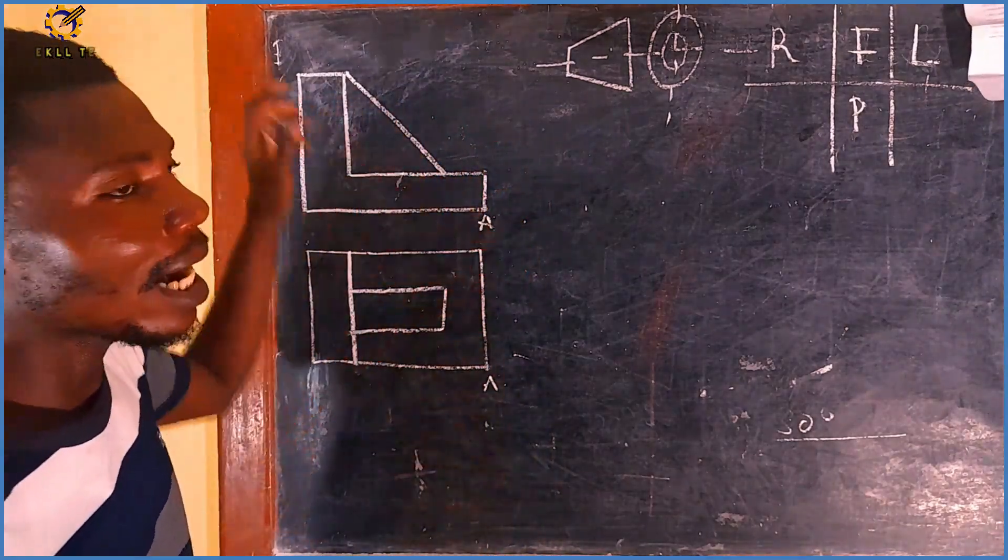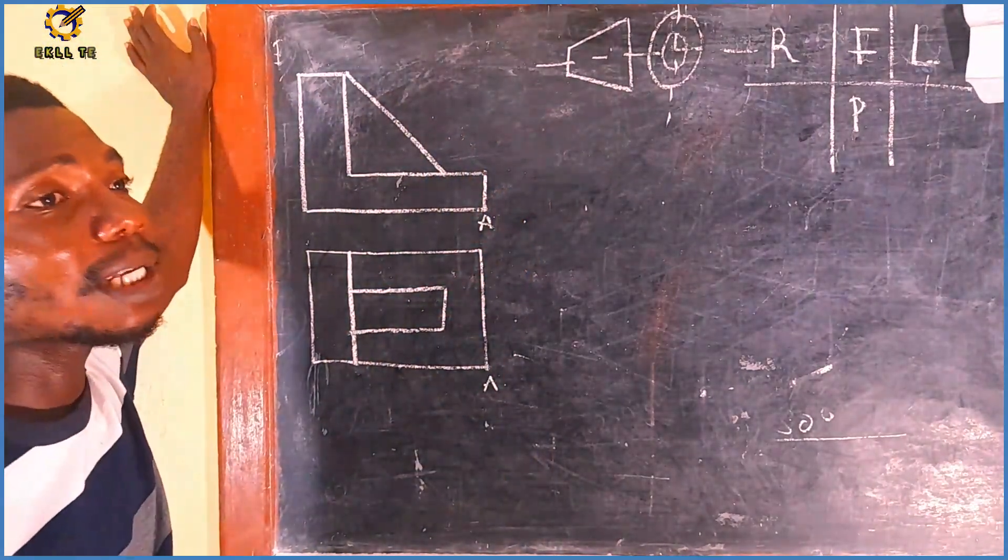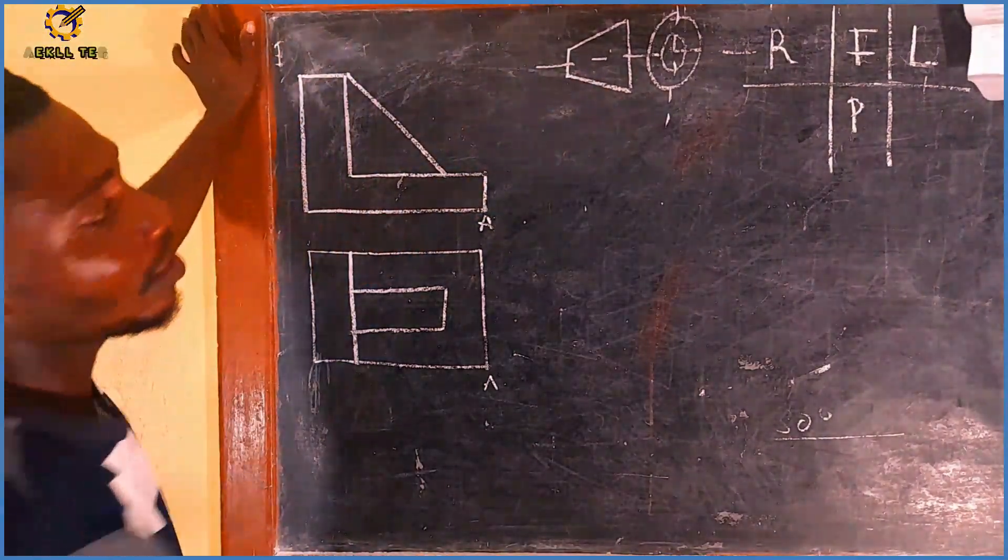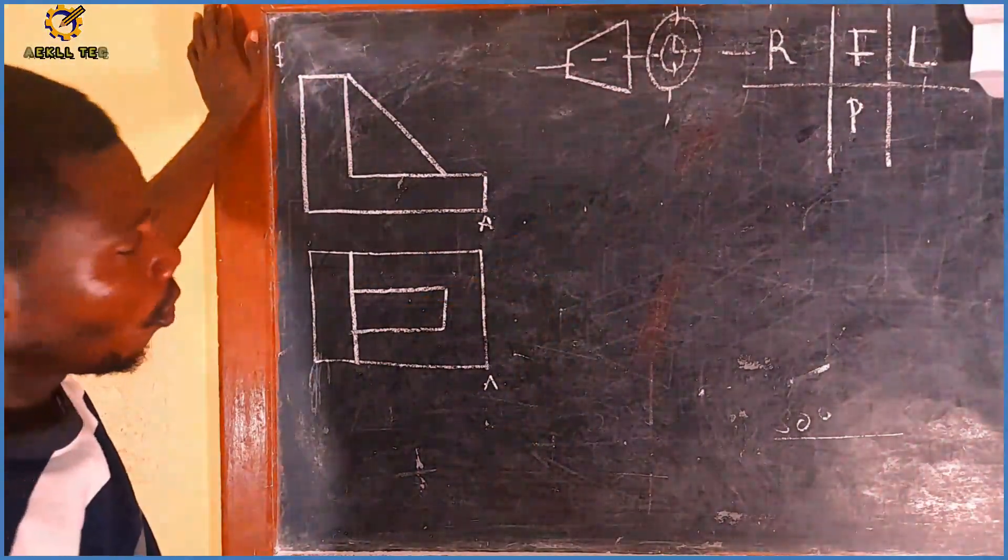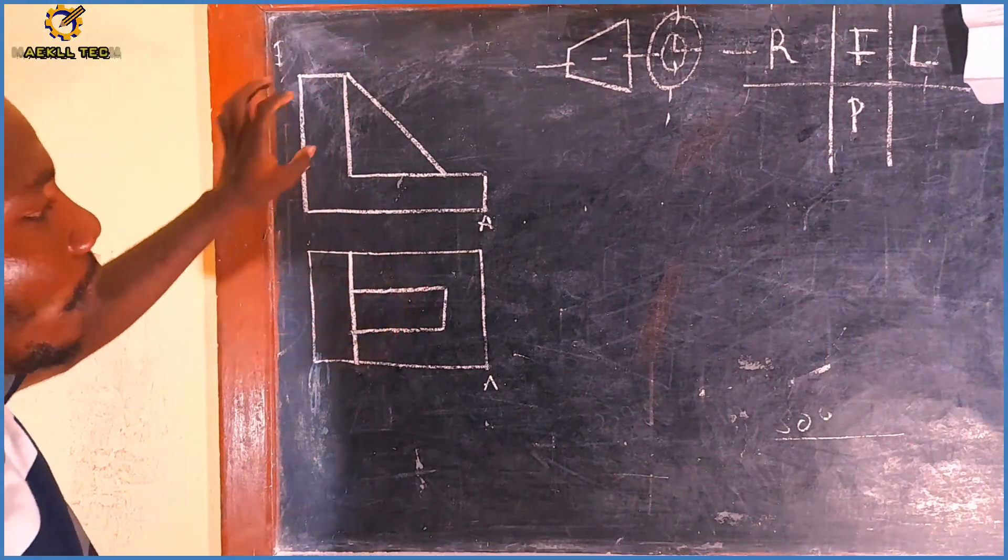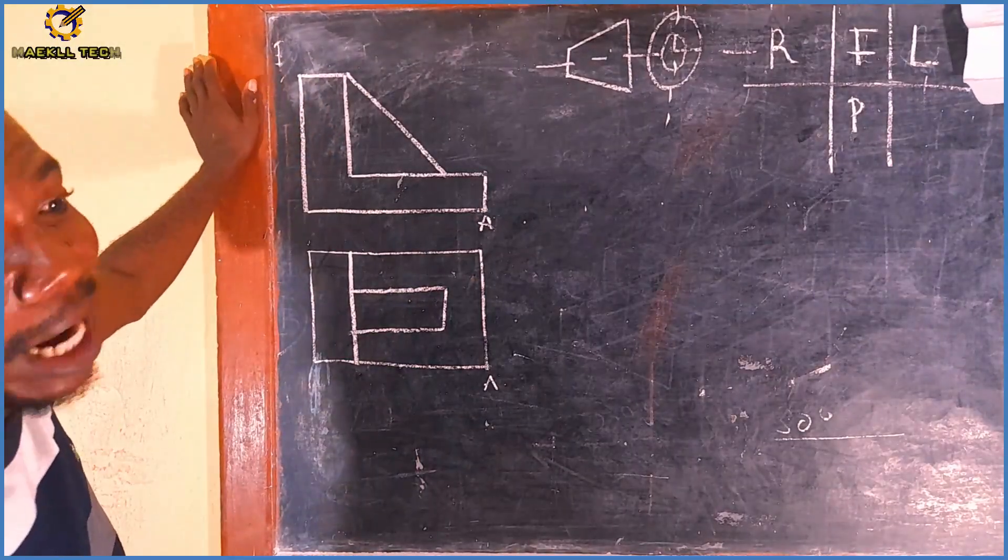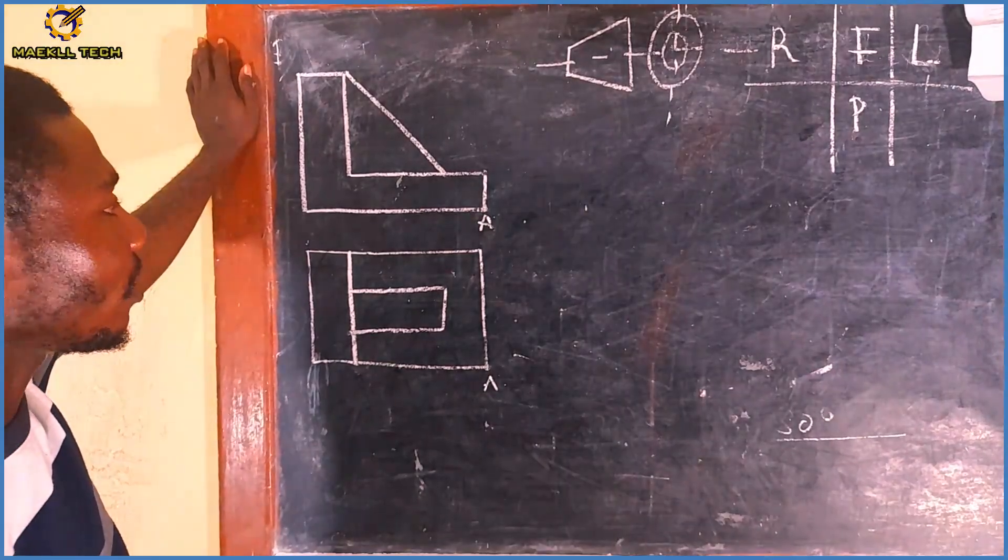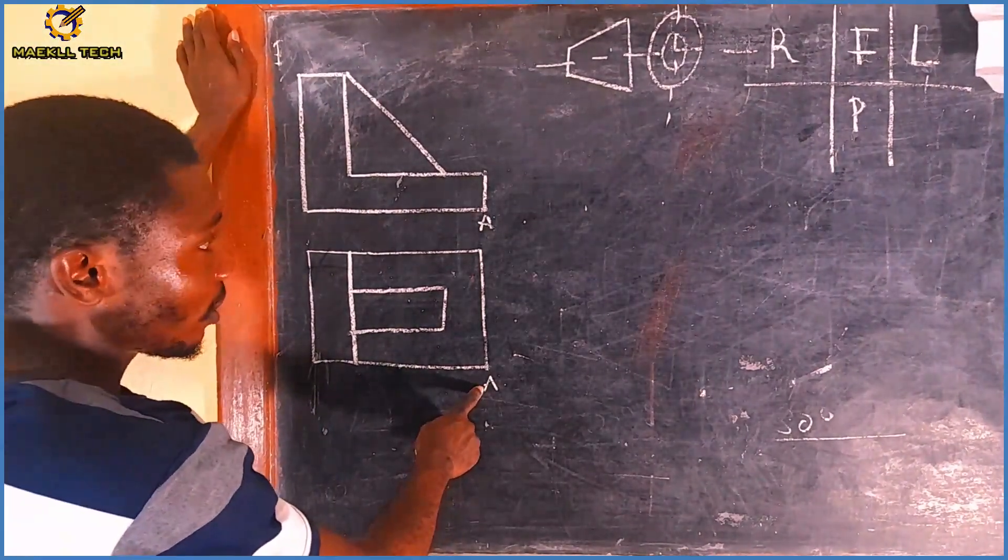We are told to make point A as the lowest point and we're only given two views. Looking at this symbol, the first angle, which means we are given the front view and the plan. We're told to convert this to isometric projection. A is going to be my lowest point.